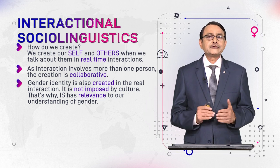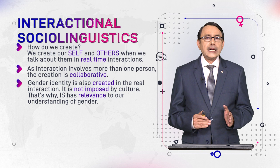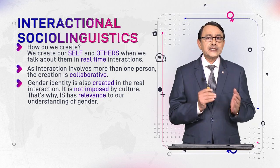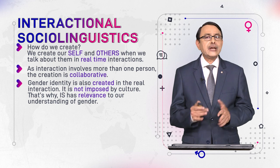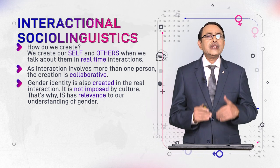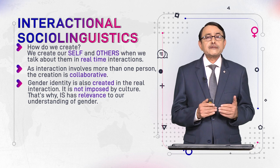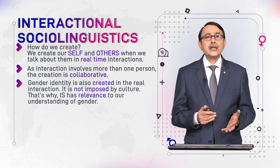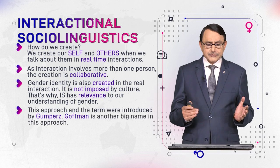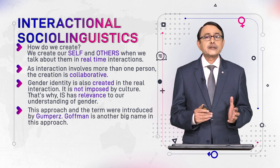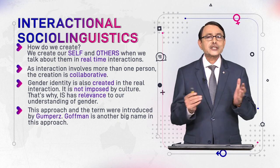From the beginning of this course, across several modules, we have repeated this point: we differentiate sex and gender. Sex is something given — it is biological. We are born men and remain men; we are born women and remain women. That is unchangeable. But gender stands for cultural construction, and this construction takes place during our interaction. This approach — interactional sociolinguistics — will explain how this construction takes place.